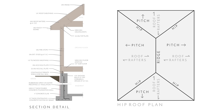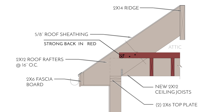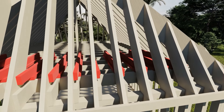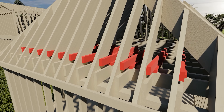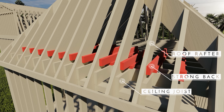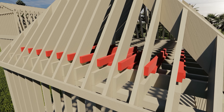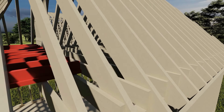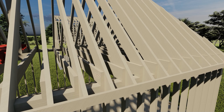Looking at the section detail for a hip roof it's very similar to a gable. The only difference is that when the ceiling joists are running the opposite way from the roof rafters there's something called a strong back, which is attached from the ceiling joists to the rafter. This secures the ceiling system to the roof system and makes everything much stronger. On the other side, the ceiling joists can be easily connected to the rafters and there's no issue.